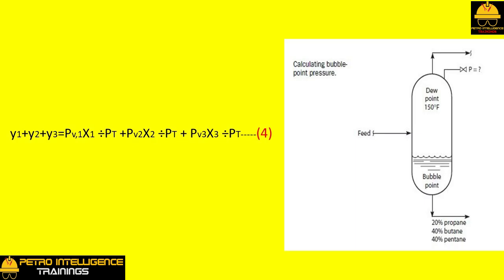Let's assume that we have three components in the vessel shown in picture. Then we could write: y1 plus y2 plus y3 equals PV1 x1 divided by PT plus PV2 x2 divided by PT plus PV3 x3 divided by PT.